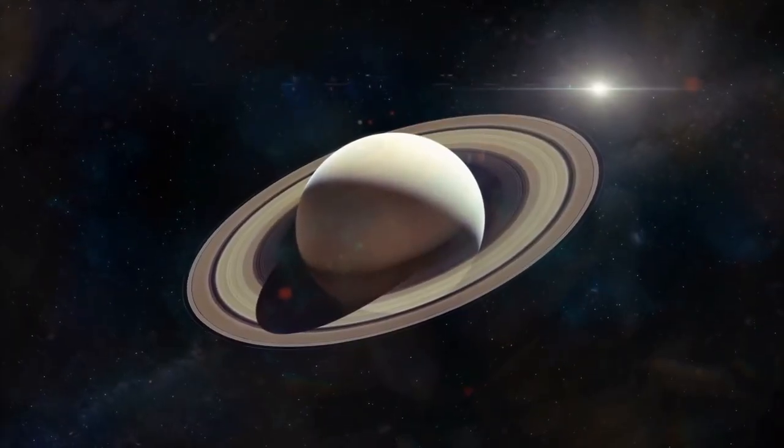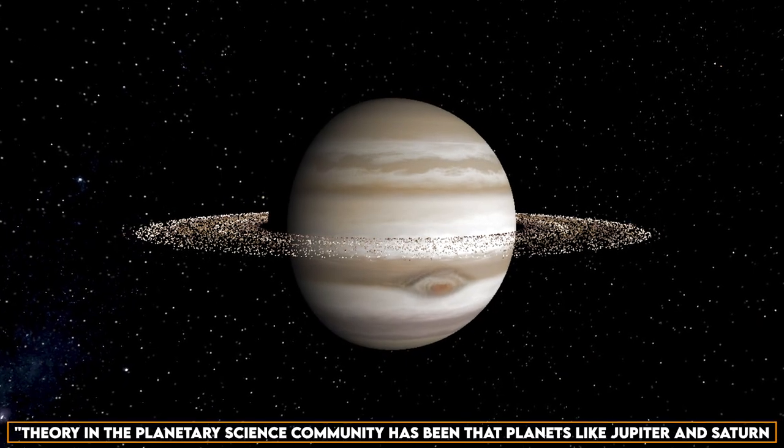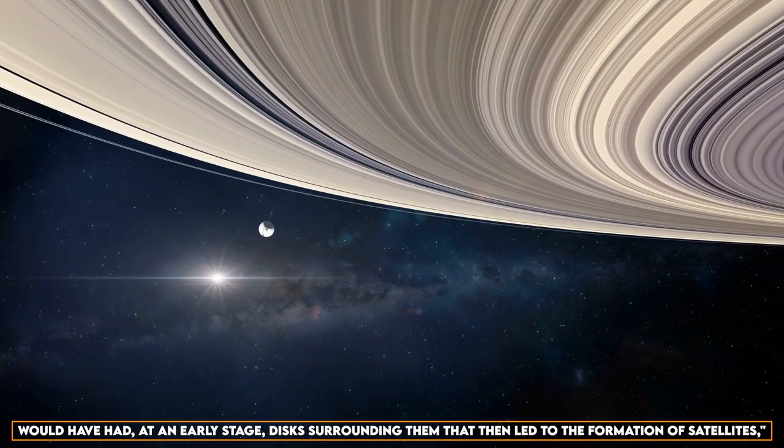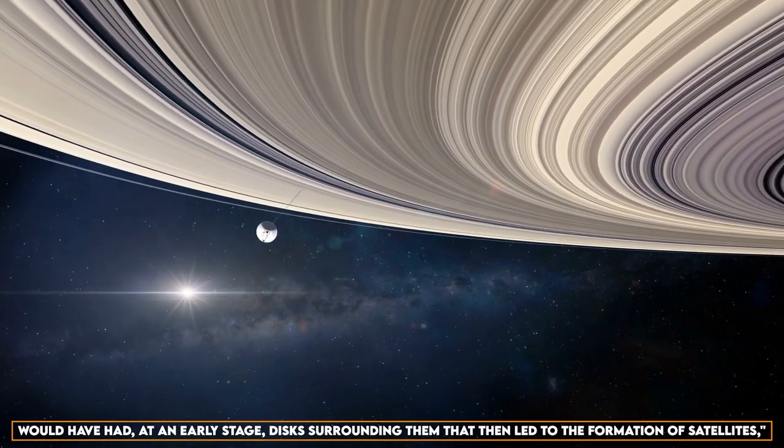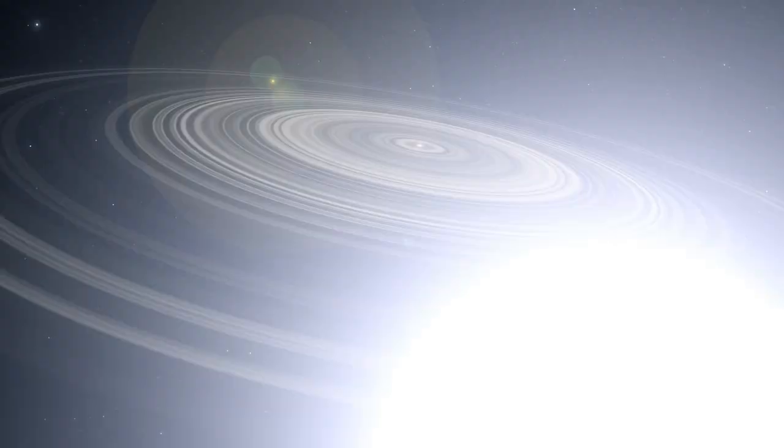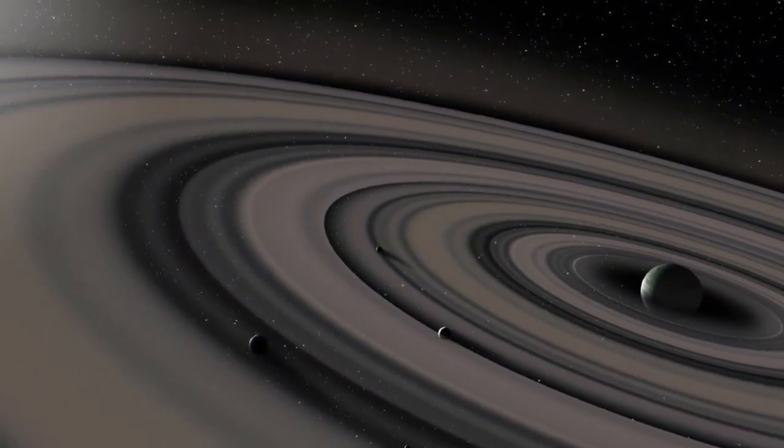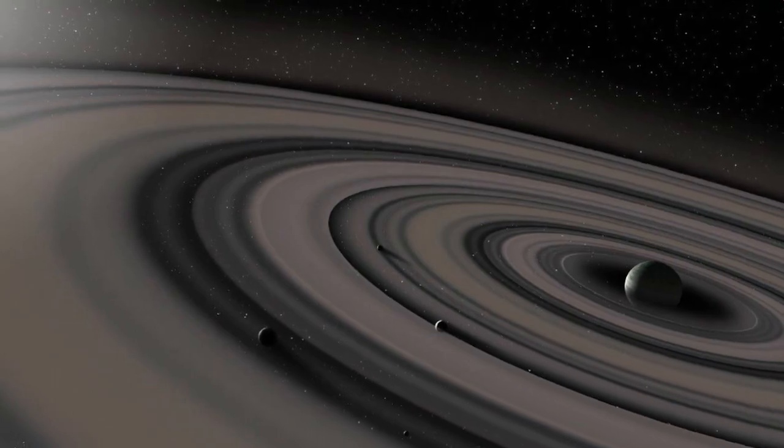Since many years ago, theory in the planetary science community has been that planets like Jupiter and Saturn would have had, at an early stage, disks surrounding them that then led to the formation of satellites as Mamajek. But no one had ever seen such a ring system before we found this object in 2012. The creation of a satellite on a million-kilometer scale around a substellar object is first seen in this image.